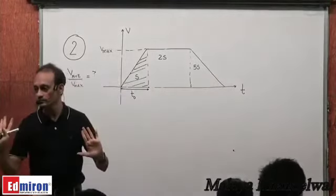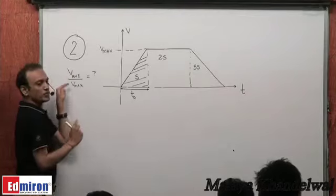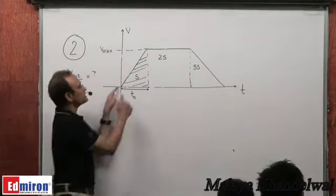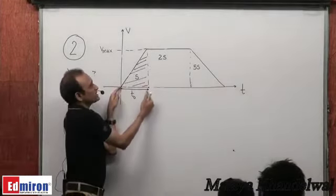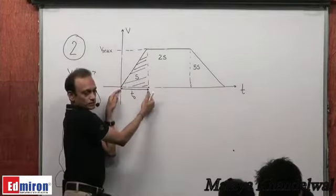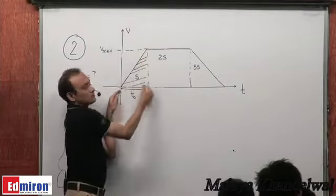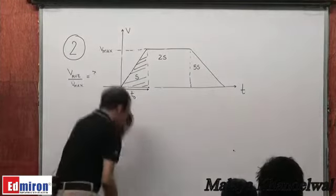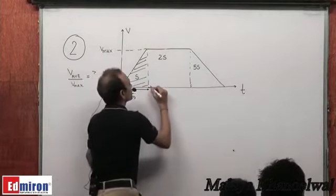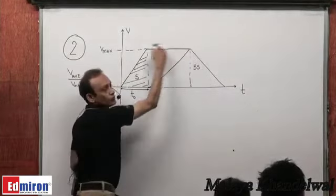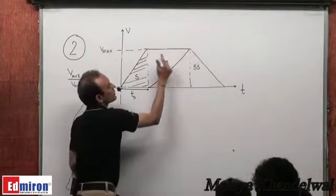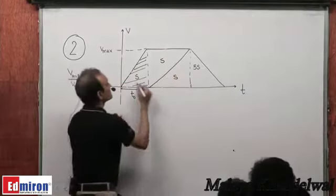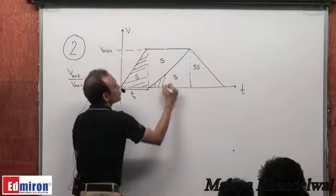We want to find the ratio of average velocity to maximum velocity. The first displacement S takes place in T0 seconds, so area of this triangle is S. Now, if the area of the rectangle is 2S, that means each of the two triangles formed has area S. So this triangle is S and this is also S.